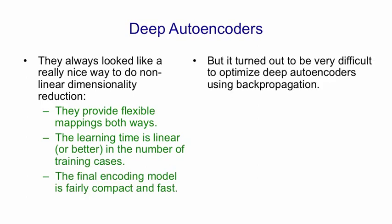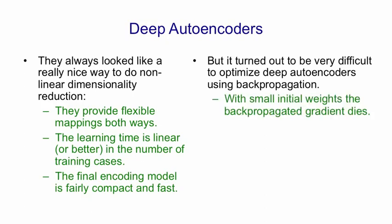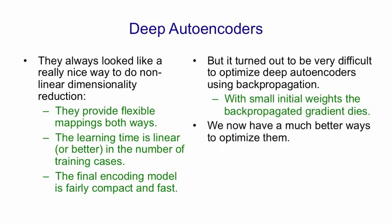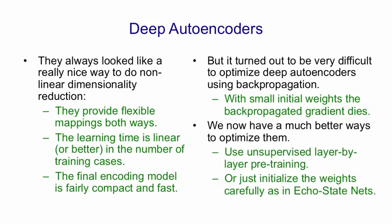Unfortunately, it was very difficult to optimize deep autoencoders using backpropagation. Typically people tried small initial weights, and then the backpropagated gradient died. So for deep networks, they never got off the ground. But now we have much better ways to optimize them. We can use unsupervised layer-by-layer pre-training, or we can simply initialize the weights sensibly, as in echo state networks.